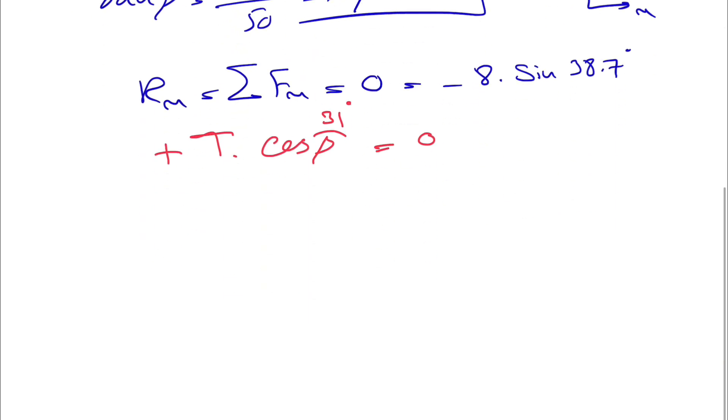From here we can find the magnitude of T, which is the unknown. That would be 5.83 kilonewtons.